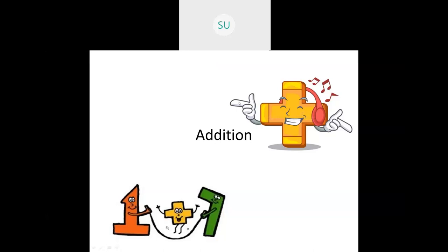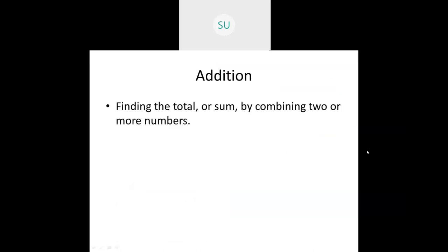So first, what is addition? Finding the total or sum by combining two or more numbers is called addition. So when you find the total or sum by combining two or more numbers, you call it addition. For example, two plus two — what is two plus two? It is four. So that is addition.